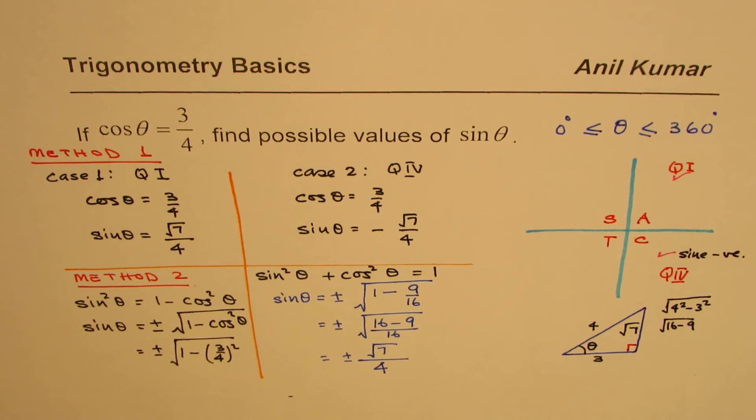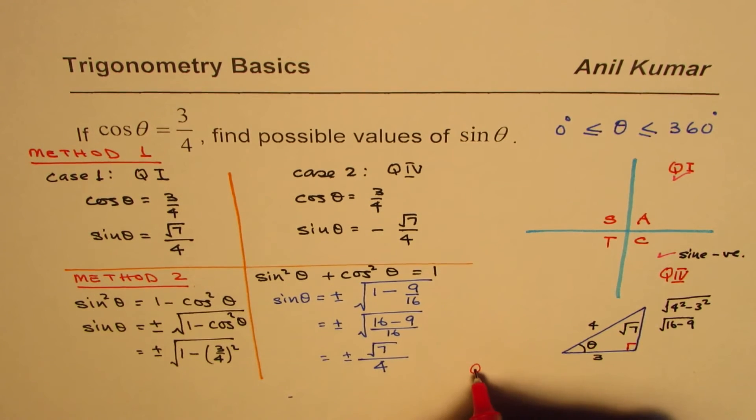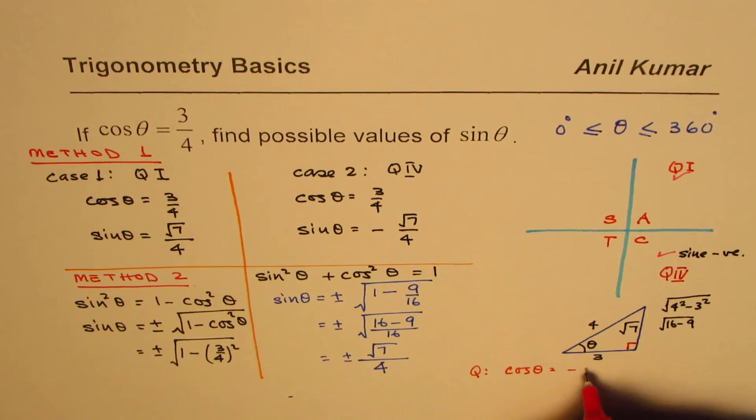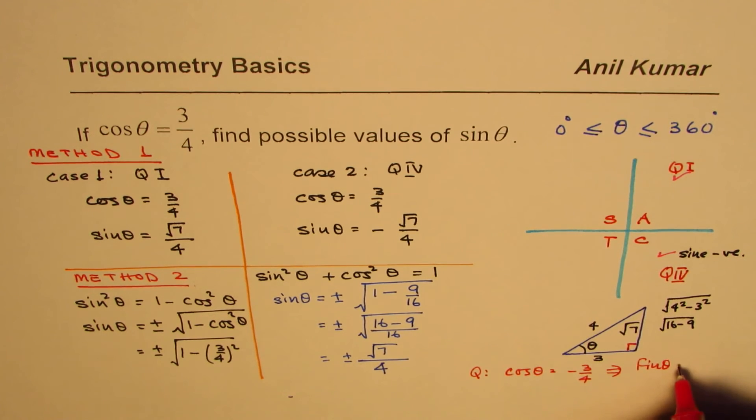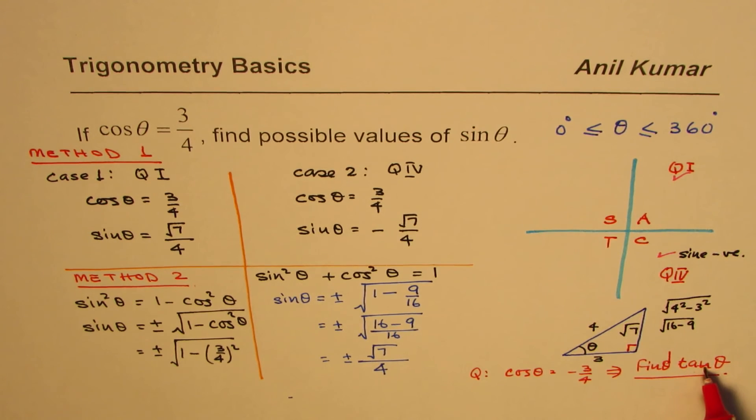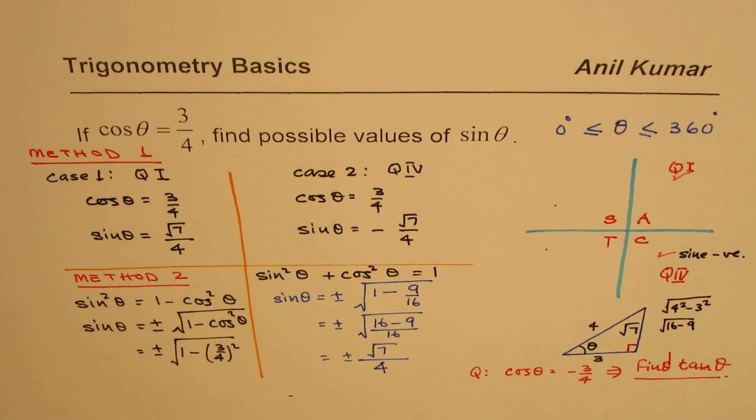As a practice question, you can try this question. Let us say if I have cos theta equals to minus 3 over 4, in that case, find tan theta. Negative means you are working in quadrant 2 and 3. Think about it and answer this question.